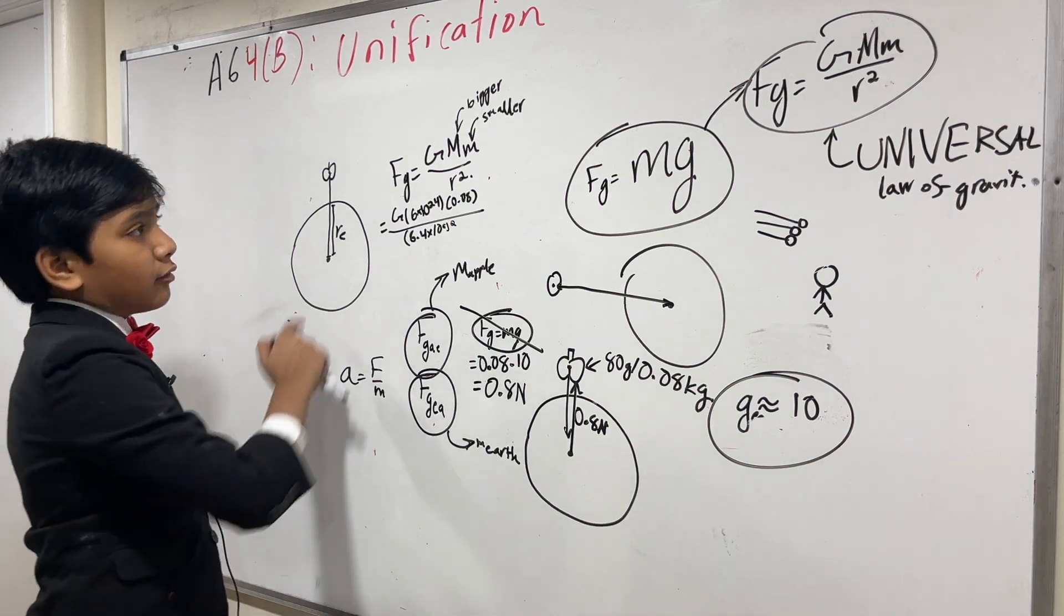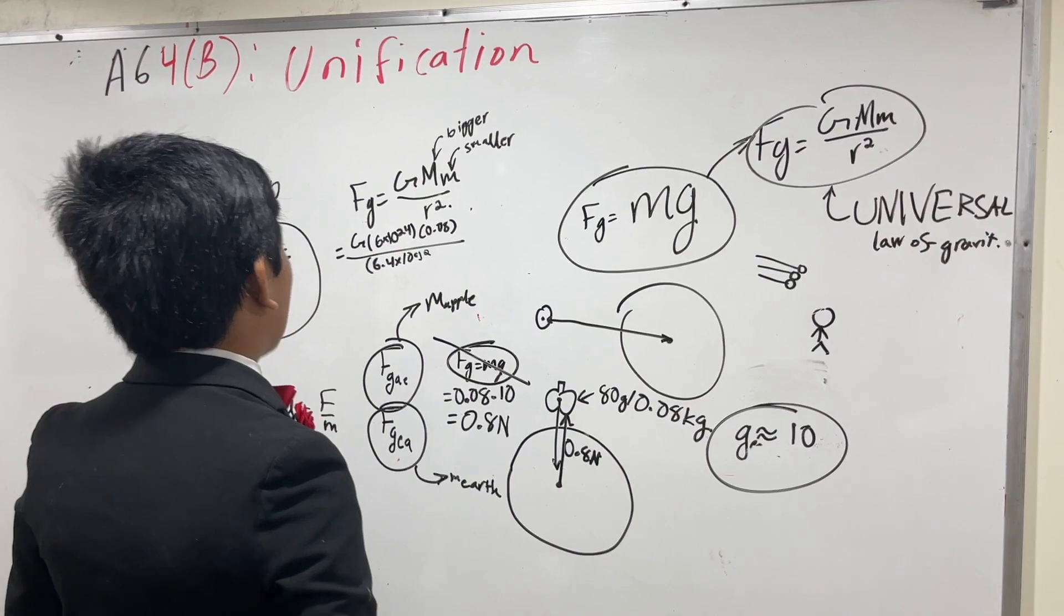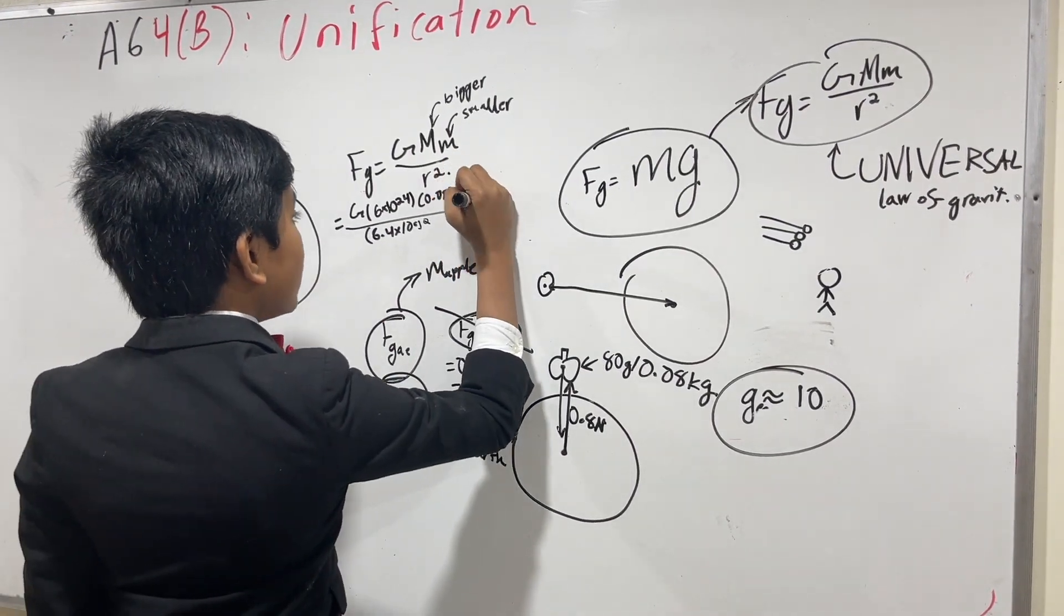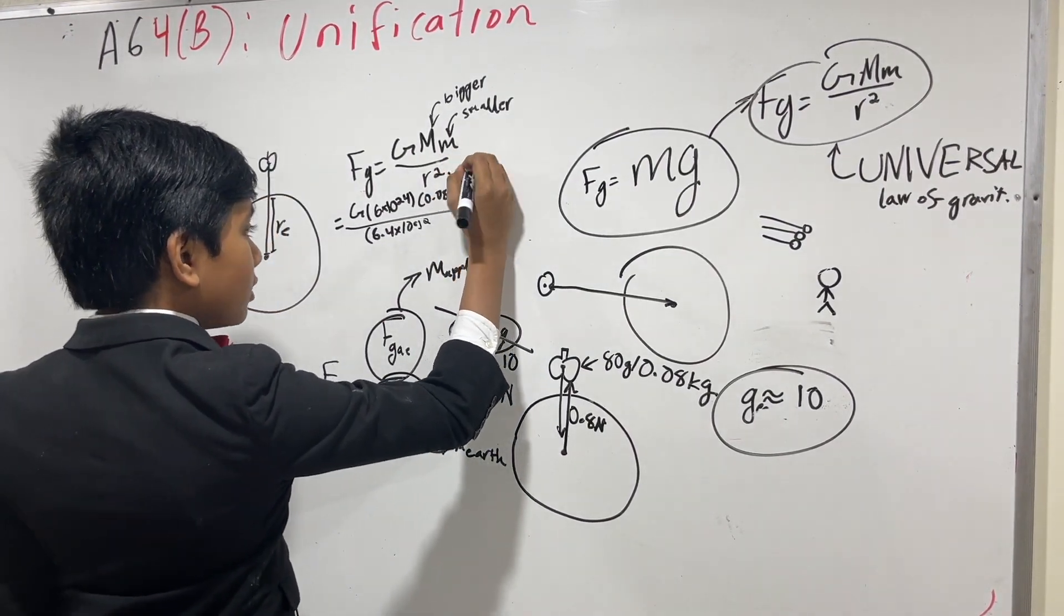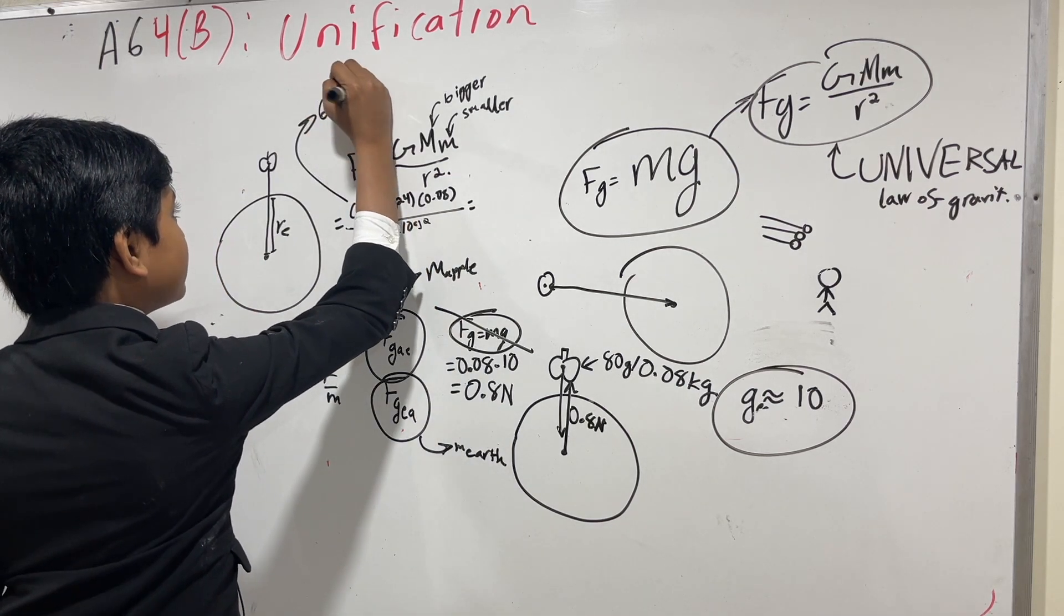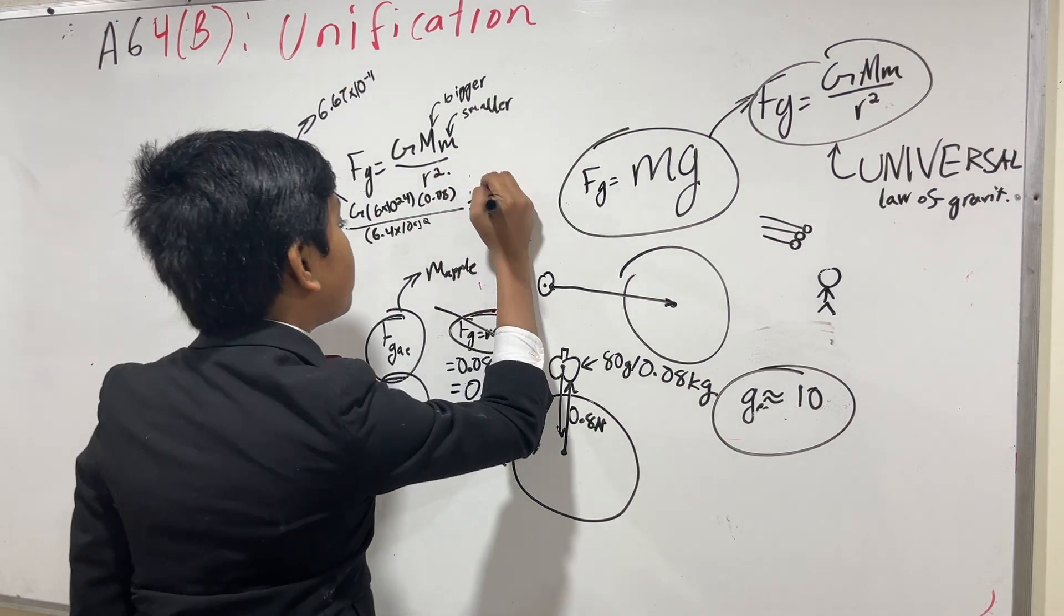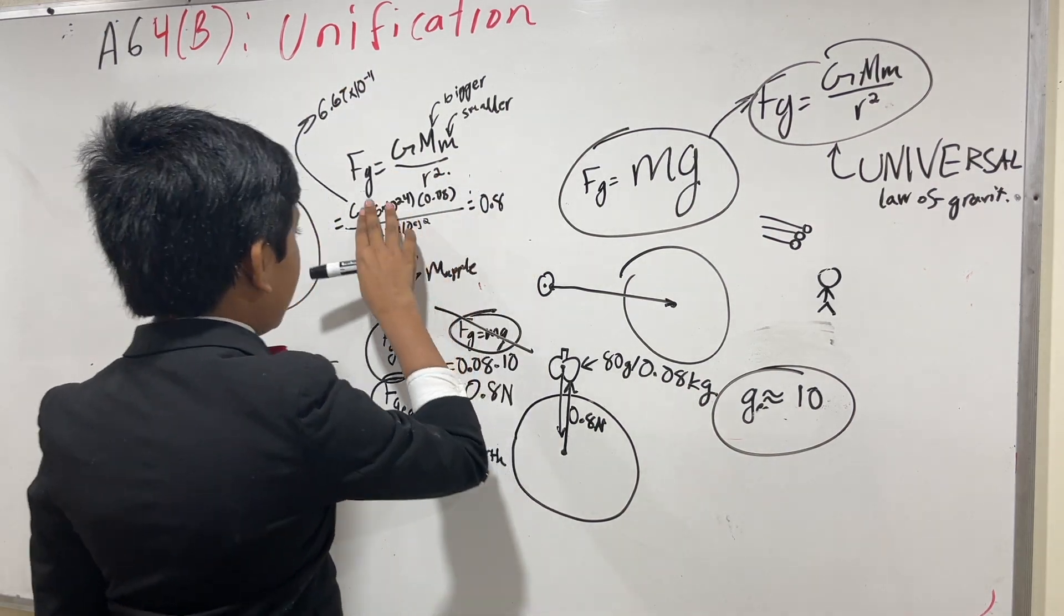So now, obviously, this isn't to scale, by the way. Otherwise, that would be a massive apple. So this, no matter what, and g, by the way, for reference, is 6.67 times 10 to the minus 11. This, no matter what, will equal to 0.8. And if we flip it the other way,